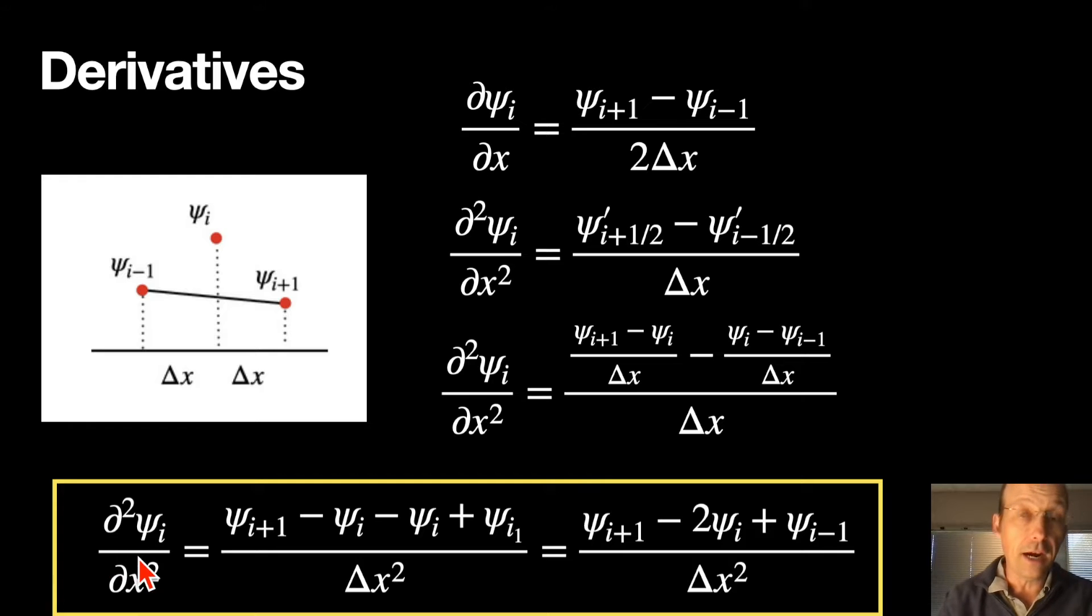The second derivative at the ith element depends on the element before it, the element, and the after it, and the element before it. Now, one thing you'll notice, one, negative two, one is important.